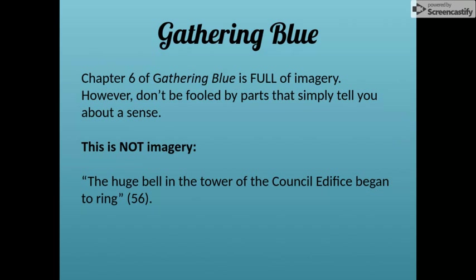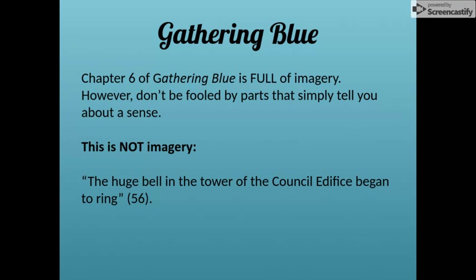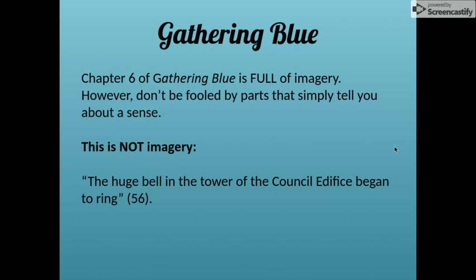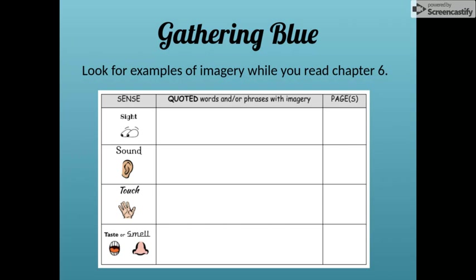You are going to read both chapters five and six. Once you get to chapter six, I want you to pay attention to the imagery. However, don't be fooled by parts that simply tell you about a sense. Students in previous years often marked this example as imagery — this is not imagery. It's on the first page of chapter six. It says, "The huge bell in the tower of the council edifice began to ring." This is just telling us about a sound. It does not give the reader a mental picture of what that bell sounded like. It is just telling, not showing. So please don't write that example down — it is not imagery. However, once you get a few pages into chapter six, when Kira is actually in her room at the council edifice, you will see lots of imagery. So wait for the actual imagery.